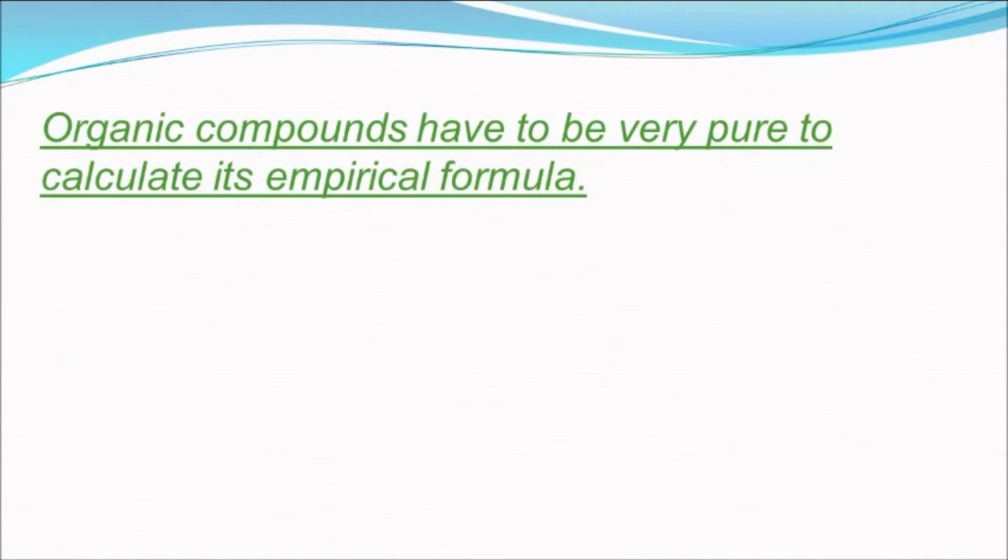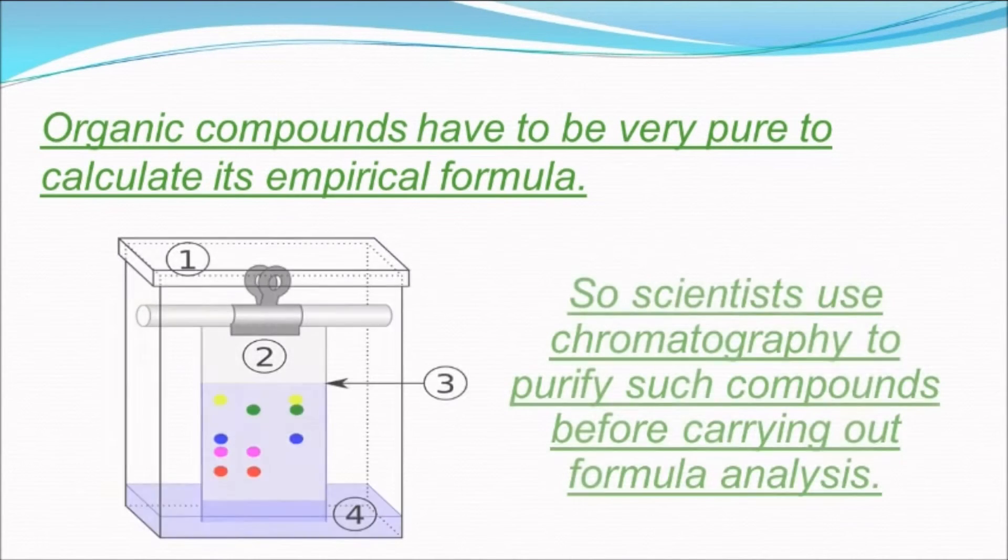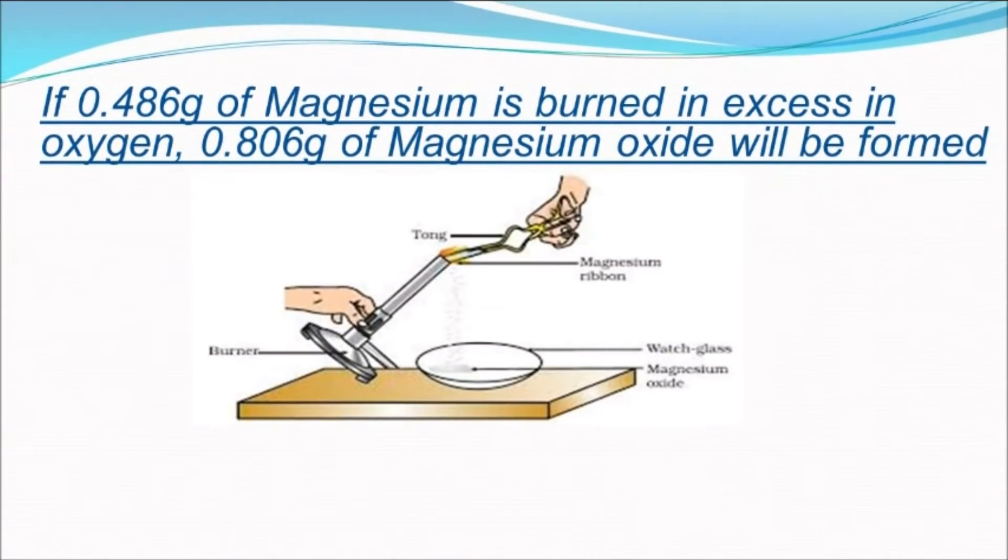Organic compounds have to be very pure to calculate empirical formula, so scientists use chromatography to purify such compounds before carrying out formula analysis. Let's start with an example to find the empirical formula of magnesium oxide.